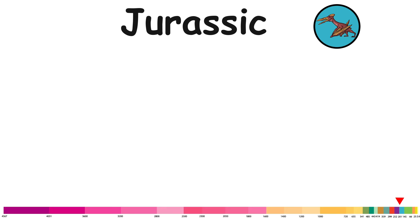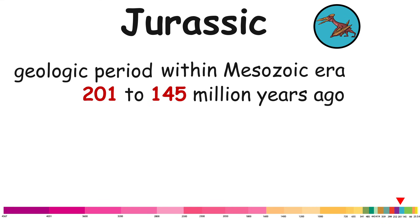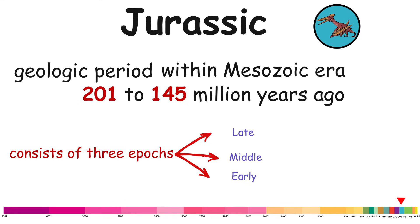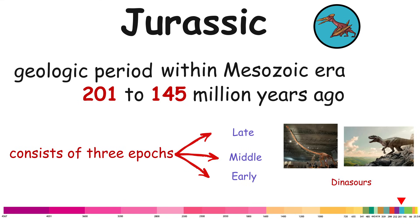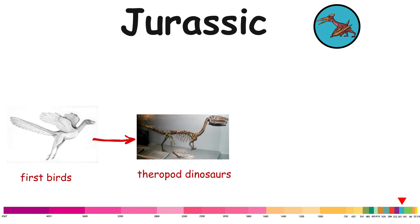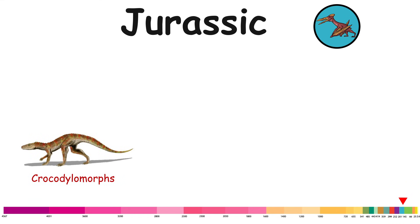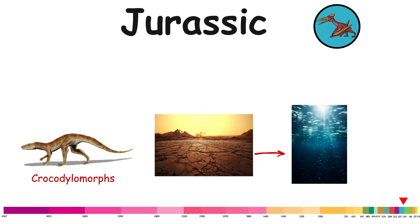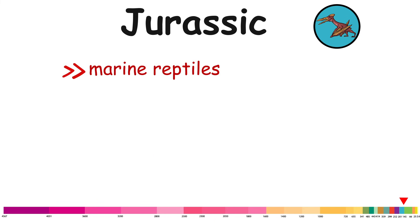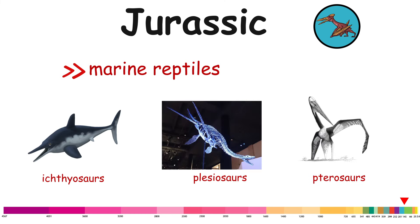Jurassic. The Jurassic is a geologic period within the Mesozoic era, spanning approximately from 201 to 145 million years ago. It consists of three epochs: Late, Middle, and Early. During this period, dinosaurs dominated. The first birds appeared, evolving from a branch of theropod dinosaurs. Other major events include the appearance of the earliest lizards and the evolution of therian mammals. Crocodilomorphs made the transition from a terrestrial to an aquatic life. The oceans were inhabited by marine reptiles such as ichthyosaurs and plesiosaurs, while pterosaurs were the dominant flying vertebrates.